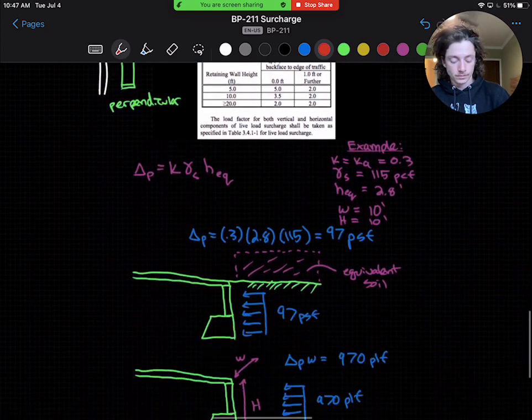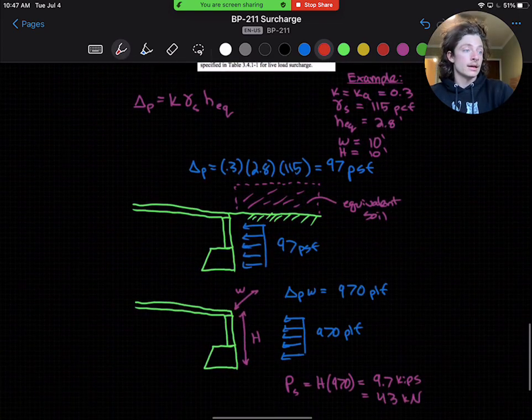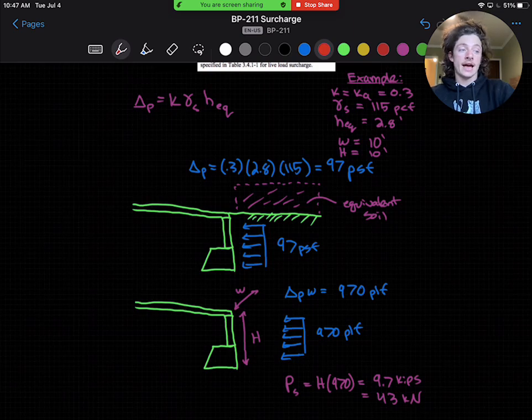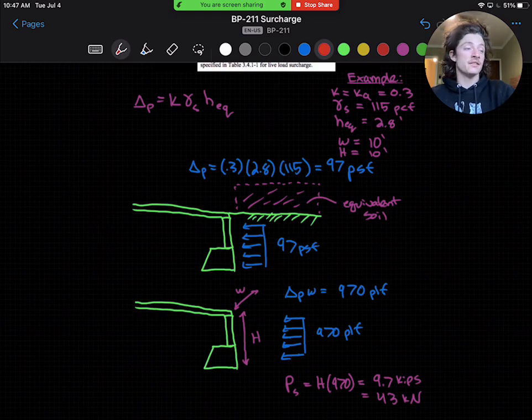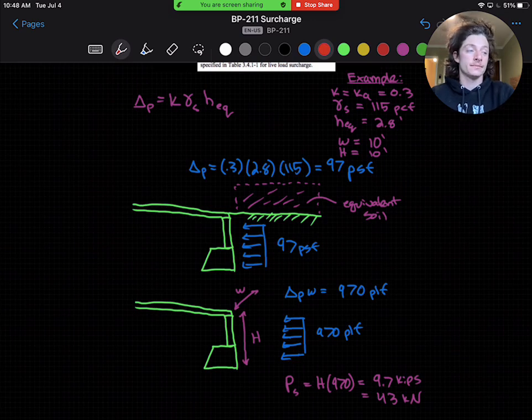For example, let's take our K as K-active of 0.3, a soil density of 115 pounds per cubic foot, an equivalent height of 2.8 feet, a width of 10 feet, and a height of 10 feet.